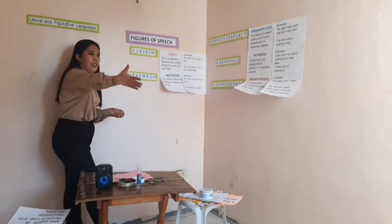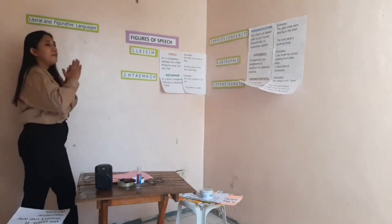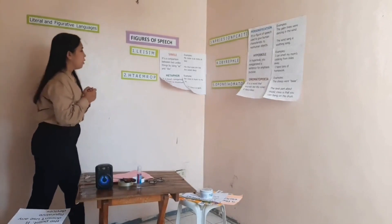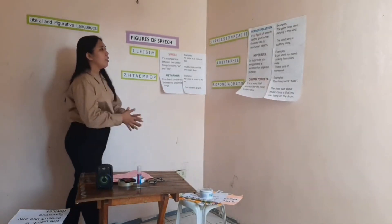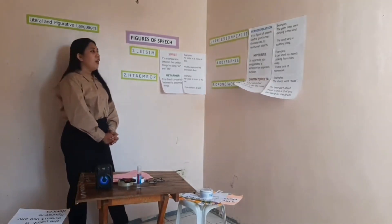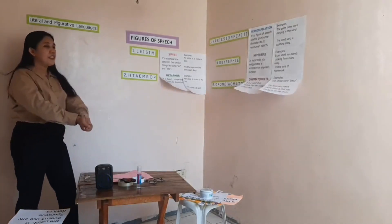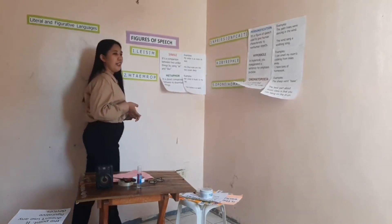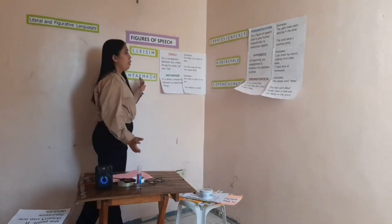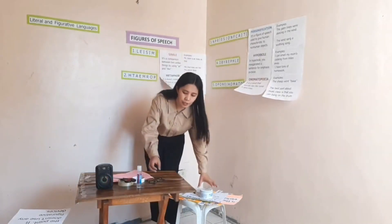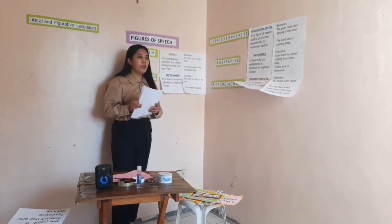Let's review. What do we mean by simile? Simile is a comparison between two unlike things by using 'as' or 'like.' How about metaphor? It is a direct comparison between two dissimilar things. What is personification? It's a figure of speech used to give human characteristics to non-human objects. Hyperbole — you exaggerate a statement for emphasis. And onomatopoeia — it is a word that sounds like the noise it describes. I think you know now what we mean by the figures of speech. I will give you a handout and you will answer it for five minutes.